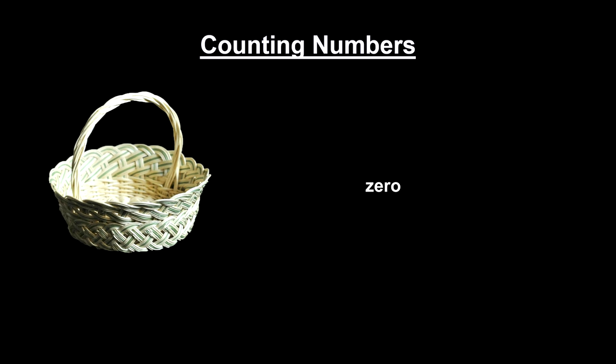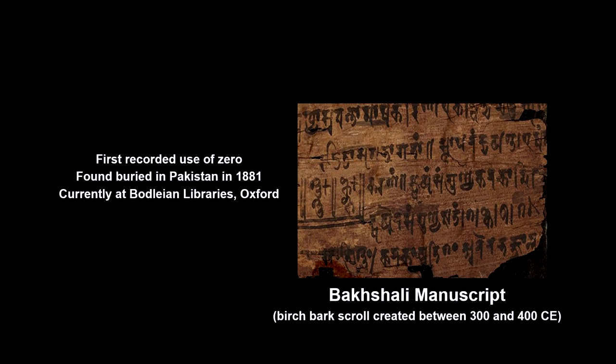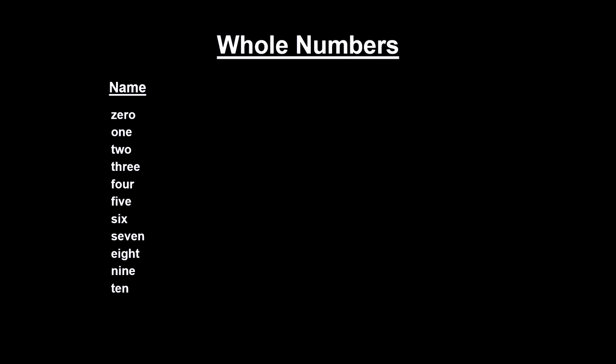The counting numbers did not include the number zero. You cannot count zero. Its origins date back to a famous ancient Indian scroll called the Bakshali Manuscript, created 1,600 to 1,700 years ago. Back then, it was written as a dot, used as a placeholder for numbers larger than nine.